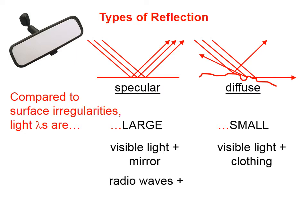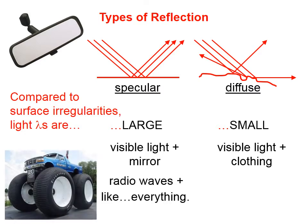Radio waves have very long wavelengths and see virtually no imperfections. In other words, radio waves reflect in a specular fashion from almost anything.